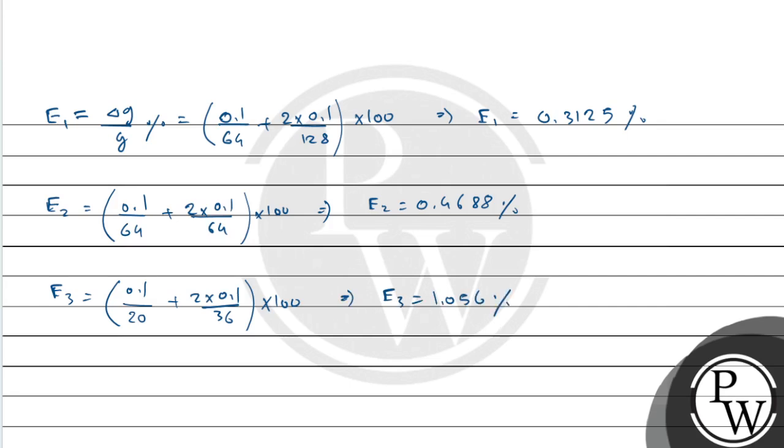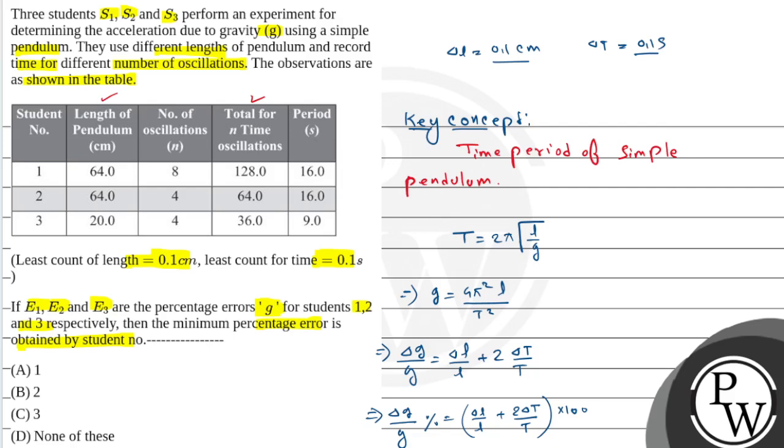Now we have to find that is minimum percentage for which student. E1 is minimum, that is 0.3125. That means student 1 is minimum. This is for student 1. The answer is that the minimum percentage error is obtained by student number 1. Option A is our correct answer. Hope you understand it.